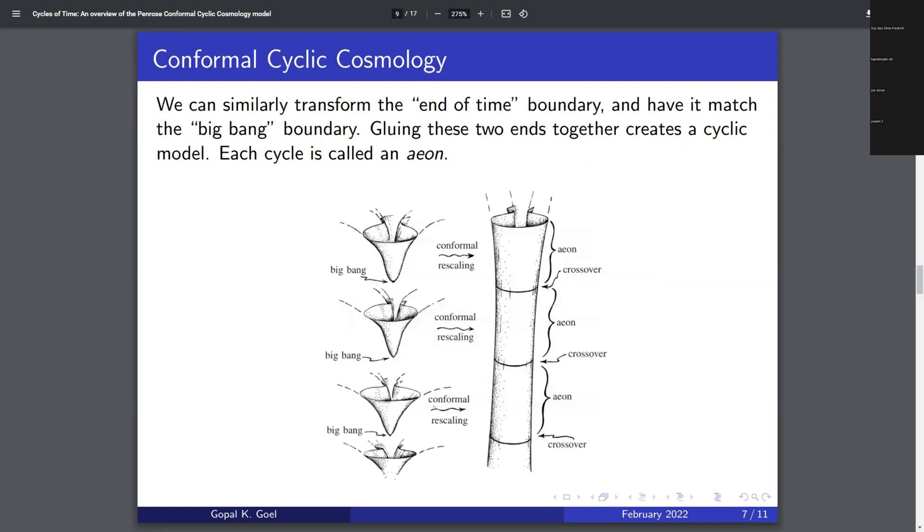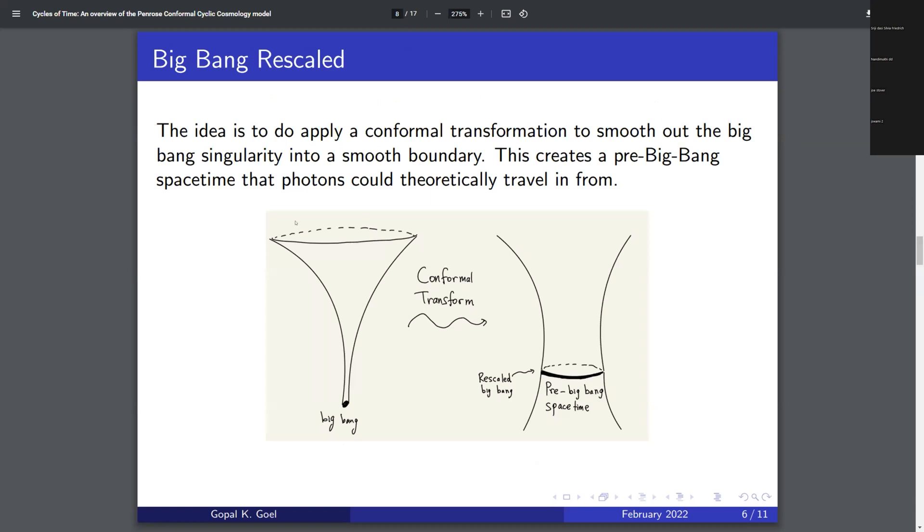So there's a lot to digest on the slide but let me go through it slowly. The idea is that you can, if I go back to this picture, I can do the same thing with the end-of-time boundary. Now this is a bit harder to imagine, but at the end-of-time you have this infinite boundary, this infinite end-of-time stage, and you can also transform that into the same sort of smooth boundary like this, because like we saw in the Escher picture you can take infinite boundaries and turn them into finite boundaries using these conformal transformations.